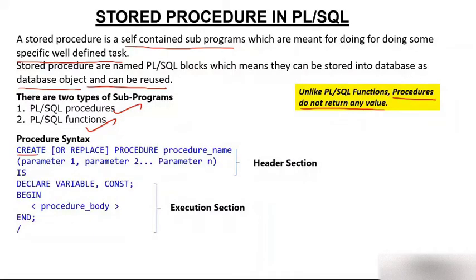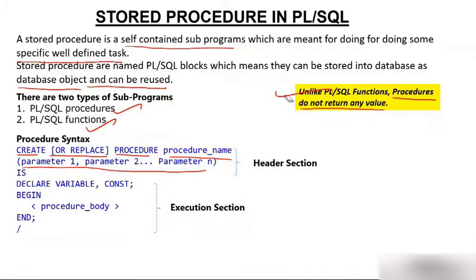The syntax starts with CREATE, then OR REPLACE if you want to replace an existing one, then PROCEDURE, then the procedure name, followed by parameters — whatever parameters you use. There is no return type, because as we mentioned, a procedure does not return a value. Then IS, followed by DECLARE for any variables or constants. Then BEGIN, then the procedure body, then END, and a slash to run. The part from BEGIN to END is called the execution part, and the header part comes before that.